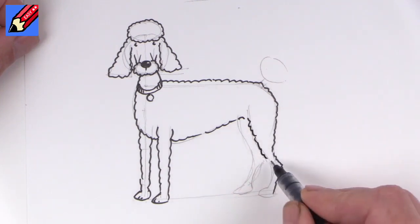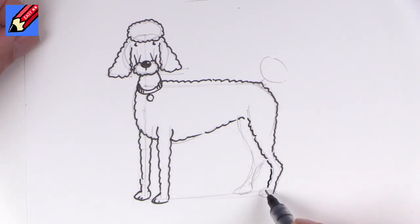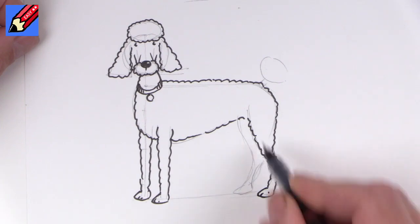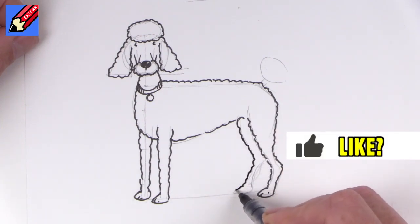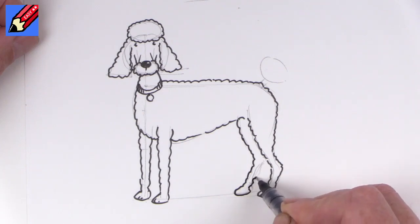And then furry, furry all the way down to the paw there. And similar here. And curve it around and curve it around the other direction there.